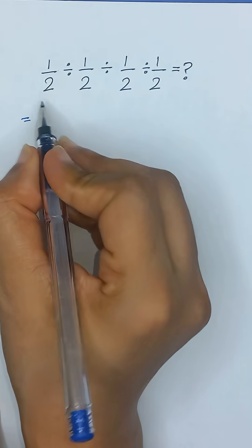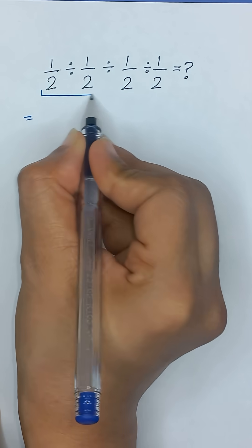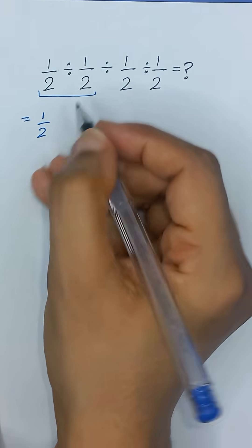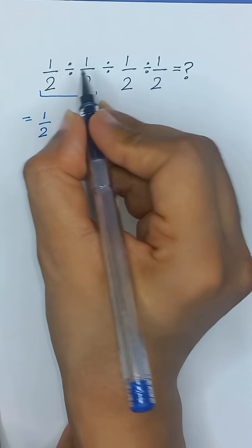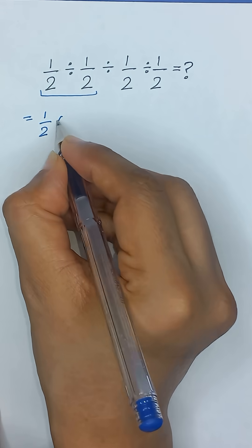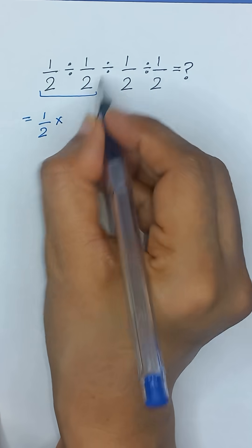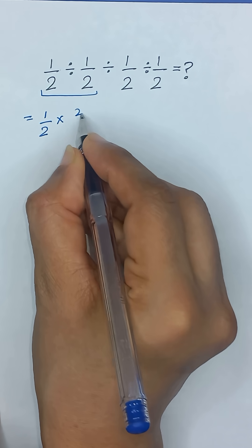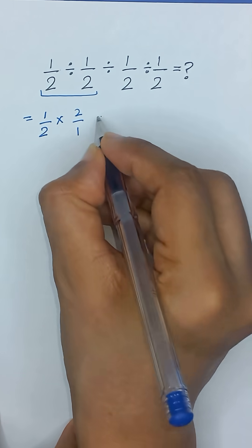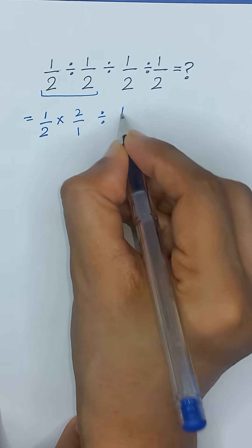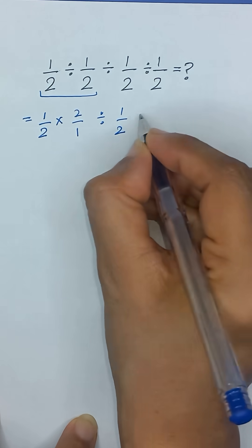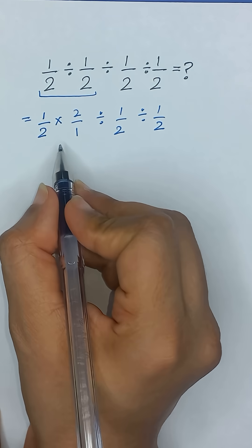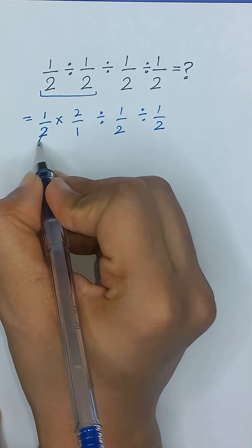First of all we will solve these two terms: 1 divided by 2. Here we will change divide into multiply and take the reciprocal of the expression, which is 1 divided by 2, so it will become 2 divided by 1. The remaining terms, divided by 2 divided by 1 divided by 2, will remain the same.